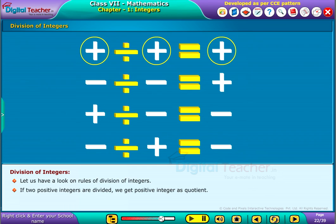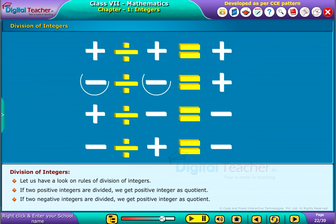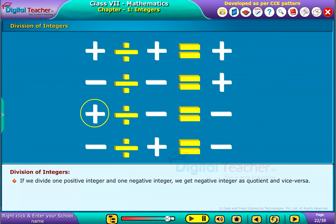If we divide one positive integer and one negative integer, we get a negative integer as quotient, and vice versa.